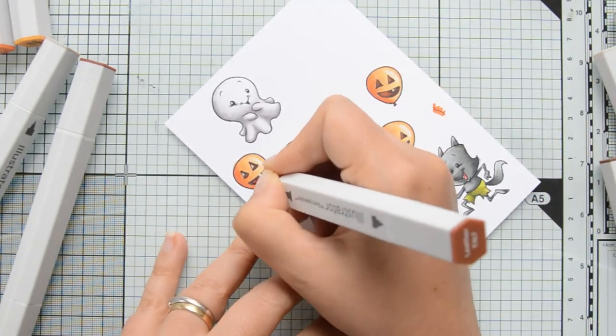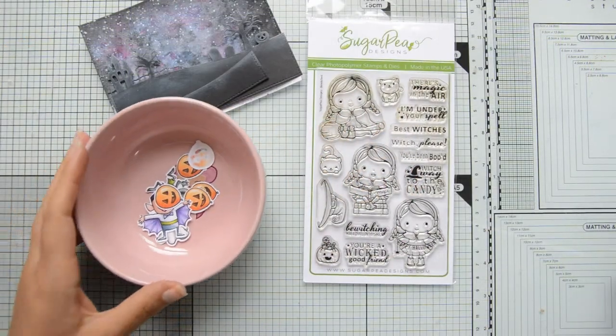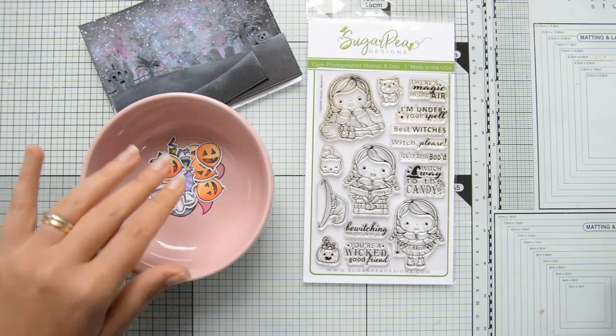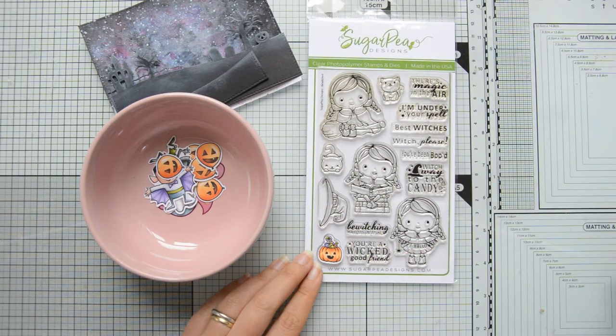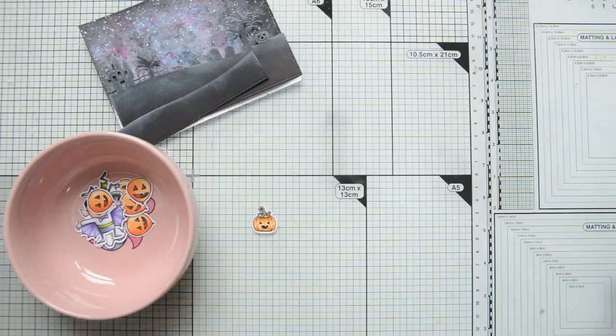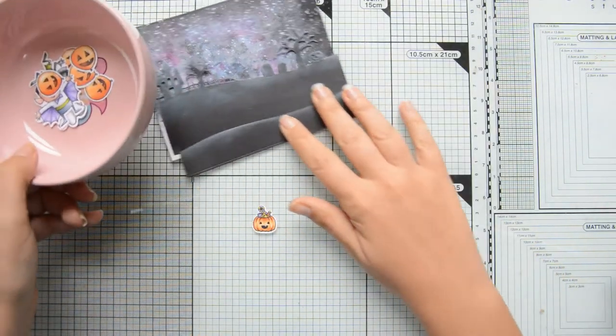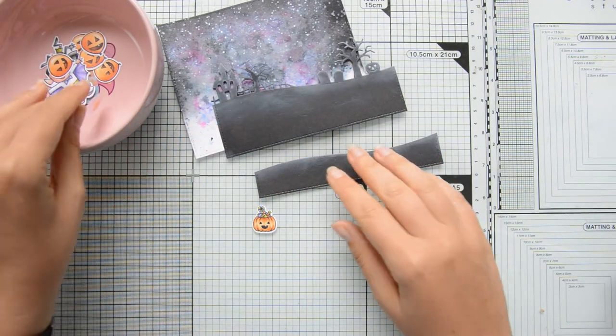Off camera I went ahead and die cut all the images in these two stamp sets. Then I decided to color in this little pumpkin with the candy from the Sugar Pea Designs Bewitched stamp set. I actually will end up using three of them, so if you are following along this tutorial, go ahead and stamp and color three.